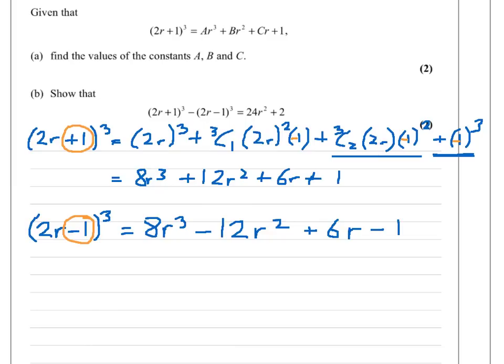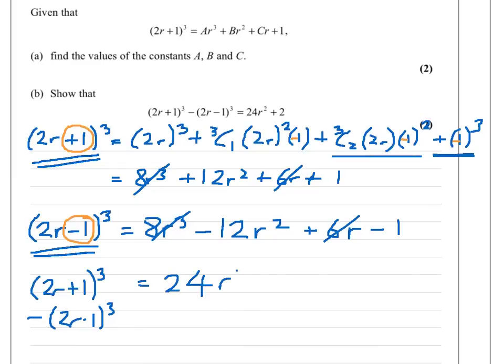Now if I do (2r+1)³ and subtract (2r-1)³, you can see the 8r³ will cancel, the 6r will cancel. I'd have 12r² minus minus 12r², which gives me 24r², and I'd have 1 minus minus 1, which is plus 2. That's what they wanted me to show them.